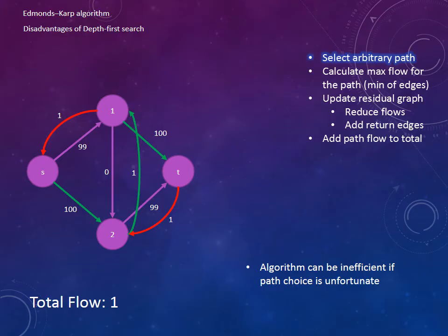And again select another arbitrary path. Now we calculate the max flow for this path, which also happens to be 1 again. Now we reduce the flows of our selected path and update the return edges. Update the total flow to 2. Continuing onwards, we select yet another arbitrary path. The algorithm could just happen to select the same one as before. That is completely fine because it is still a valid path.